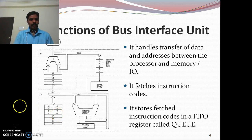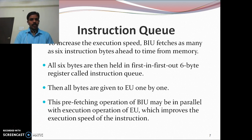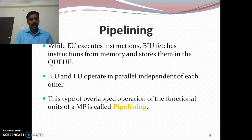Whenever the Bus Interface Unit is fetching an instruction from memory, the Execution Unit can simultaneously execute another instruction. So, in parallel, the Bus Interface Unit and the Execution Unit perform independent operations. This particular operation is called pipelining. Because of this pipeline — because of the instruction queue — the execution speed of the microprocessor increases. The BIU and Execution Unit operate in parallel, independent of each other, and these non-overlapping operations are called the pipeline.